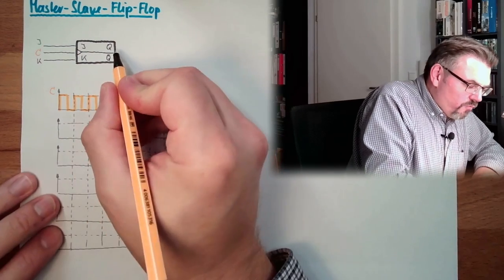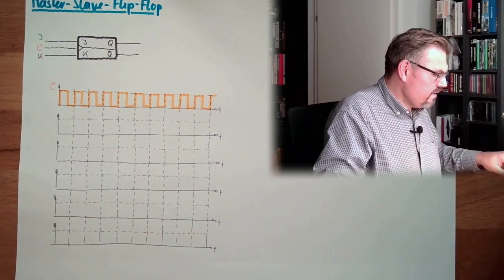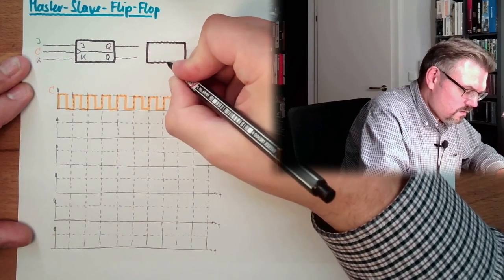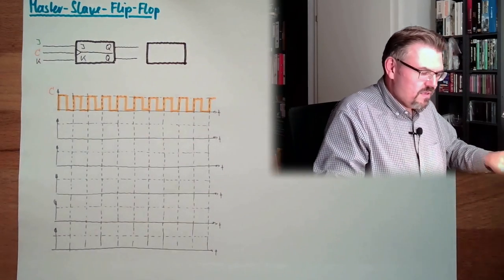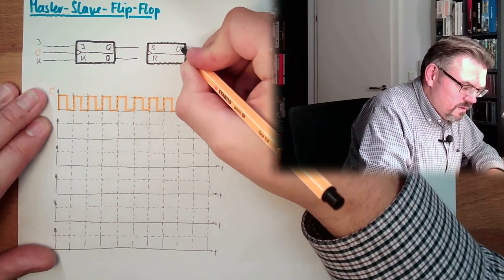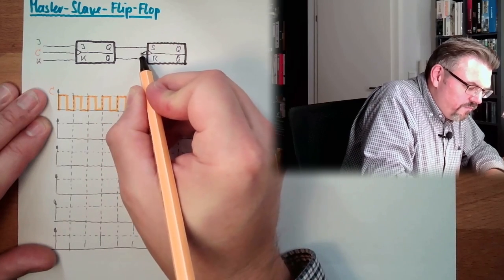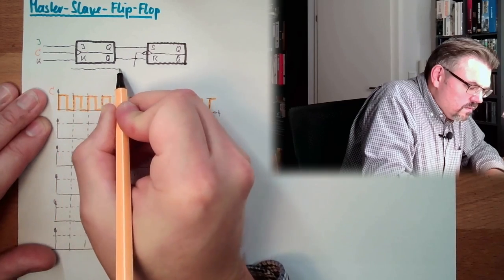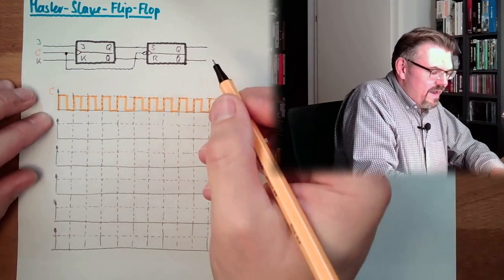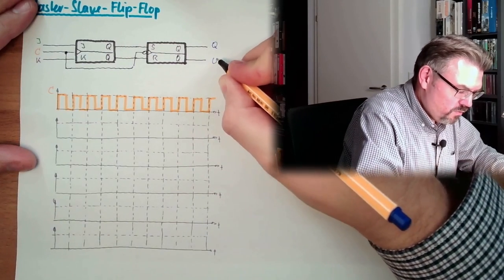Then the output of this one is not going directly out. There we have another, a second flip-flop here. And this second flip-flop is also edge-triggered. Can be of SR type. One second flip-flop and we will use the same clock signal as here. We're going out here.